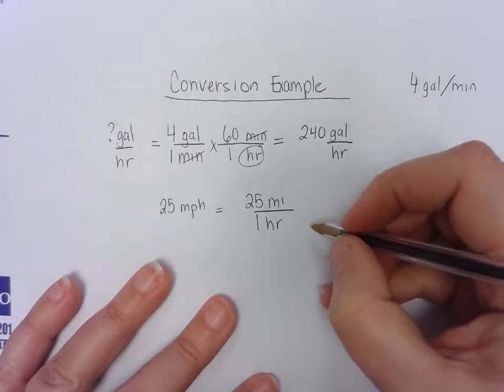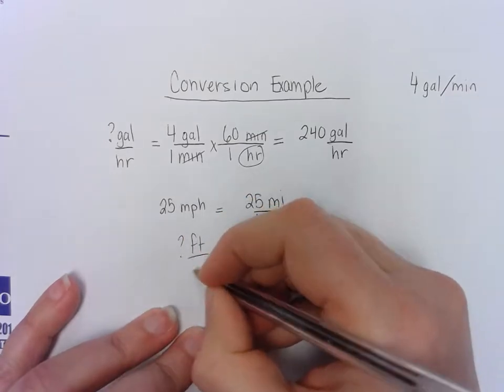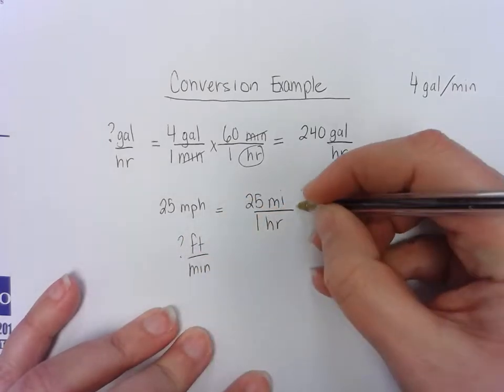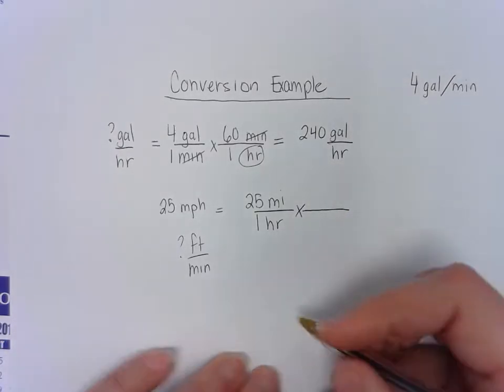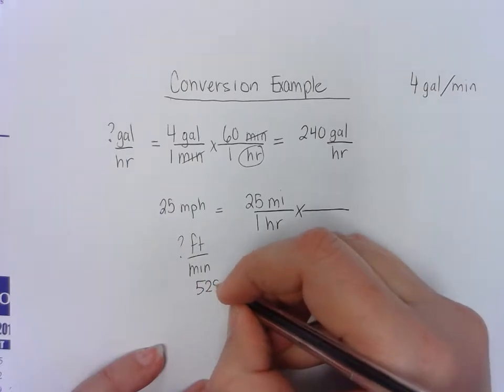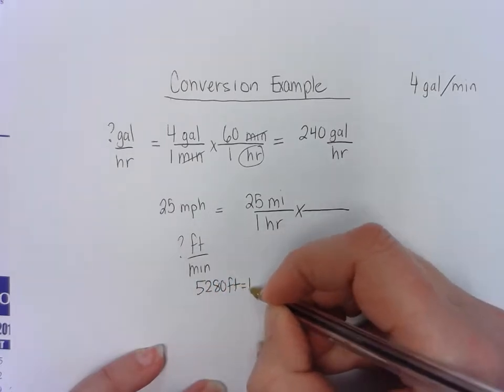Let's say we're trying to figure out how many feet per minute that would be. So if we were looking at that problem, we would need to know some conversion factors. We would know on our papers we have one that says 5,280 feet is one mile.